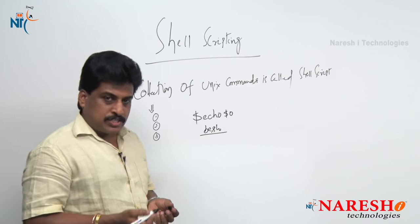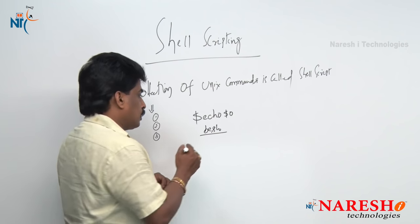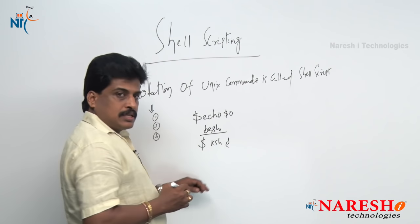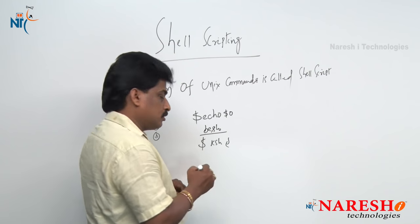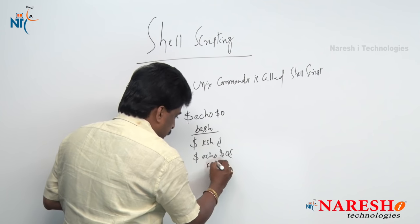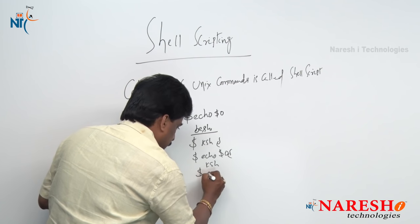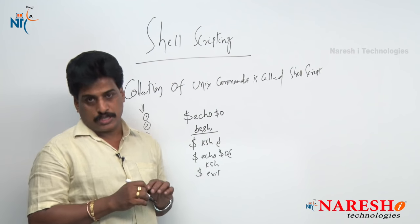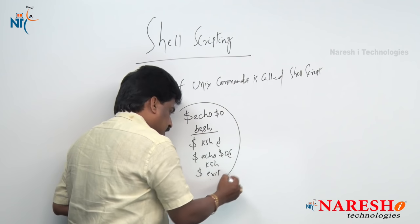You can change from one shell to another shell. Once bash is displayed and you want to convert to ksh — the Korn shell — just type that shell name and hit the return key. It converts into ksh. To verify, type echo $0 again and it displays the Korn shell. The exit command is used to exit from one shell back to another shell.